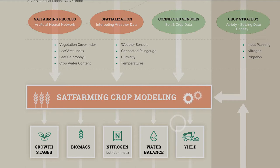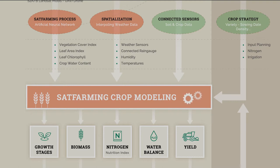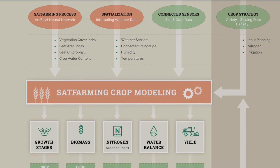Some parameters like available nitrogen and root system dynamics are essential in crop cover expansion. So remote sensing data are used to tune these parameters during the growing season to improve the crop analysis and forecasted results.